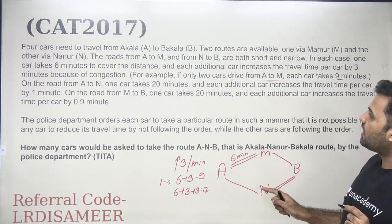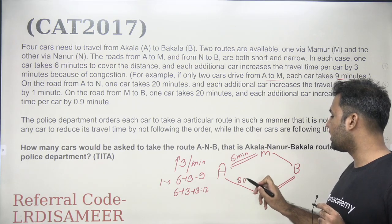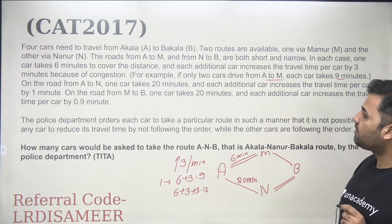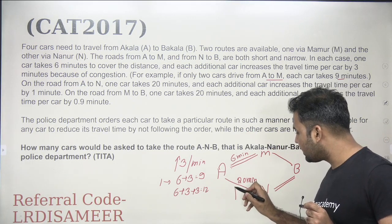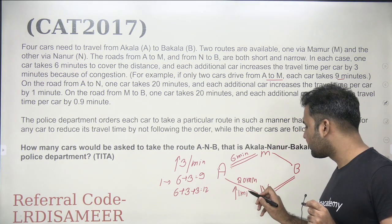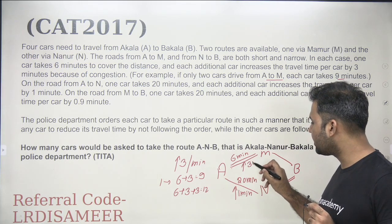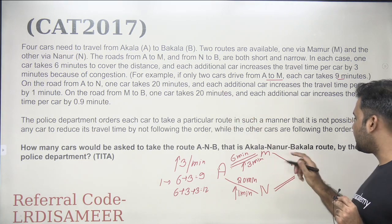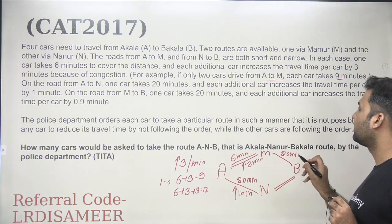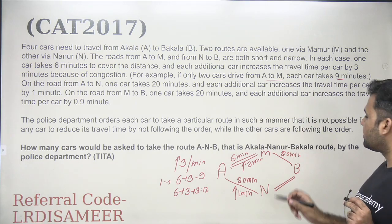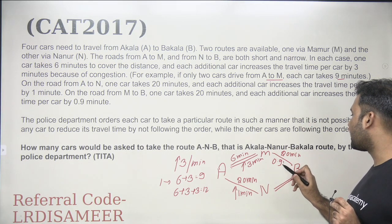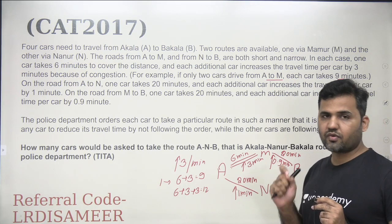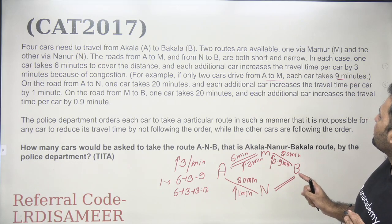On the road from A to N, one car takes 20 minutes, and each additional car increases the travel time by one minute. On the road from M to B, one car takes 20 minutes and each additional car increases the travel time by 0.9 minutes.